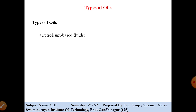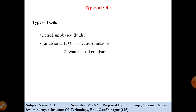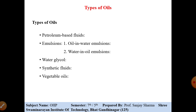The different types of oils are: first, petroleum-based fluid; second, emulsion type fluid, which is categorized into oil-in-water emulsion and water-in-oil emulsion; third, water glycol type oil; fourth, synthetic fluid; fifth, vegetable oil; sixth, biodegradable oil; and the last, fire resistance fluid. These are the different types of oil used in the hydraulic system.